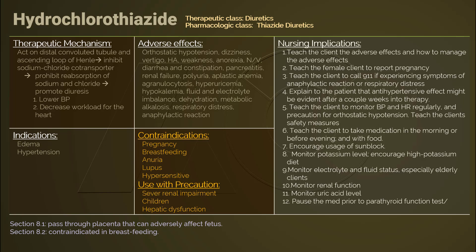Monitor kidney function. BUN, creatinine, and basic metabolic panel are commonly used laboratory tests for checking kidney function in clinical practice. For a thiazide diuretic to take effect, the integrity of kidney function is vital. Monitor uric acid level, as hydrochlorothiazide could induce hyperuricemia and gout. Hydrochlorothiazide should be paused prior to parathyroid function testing.